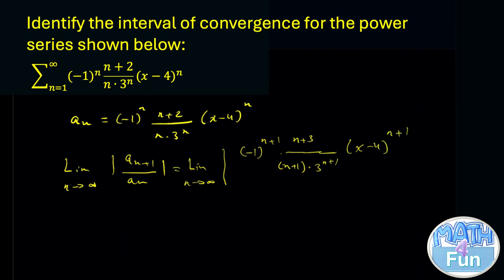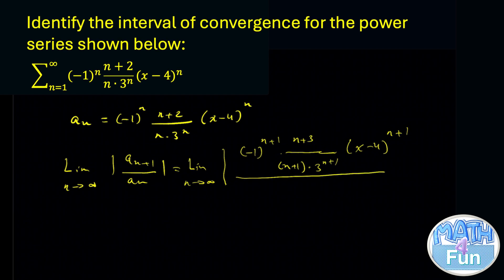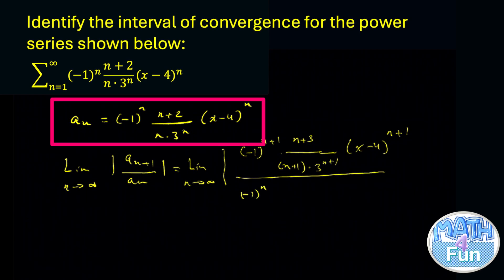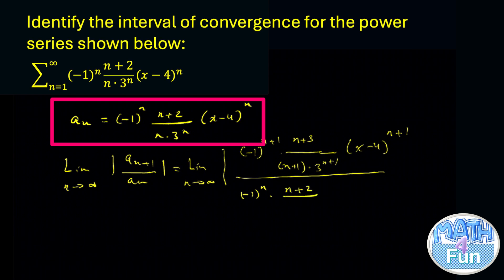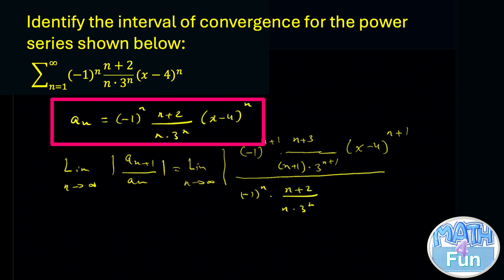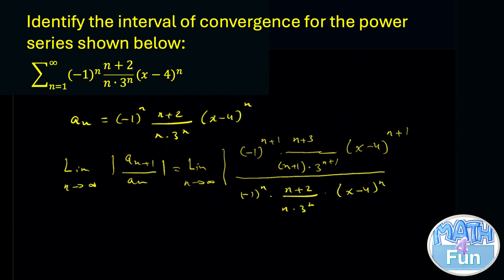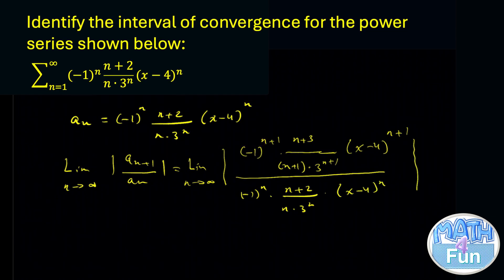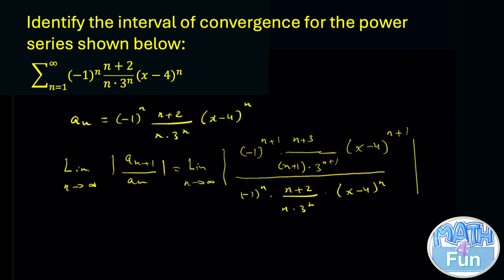All over a_n, which is minus 1 to the power n, multiplied by n plus 2, over n, multiplied by 3 to the power n, all multiplied by x minus 4 to the power n — all inside absolute value. Now we have to simplify.